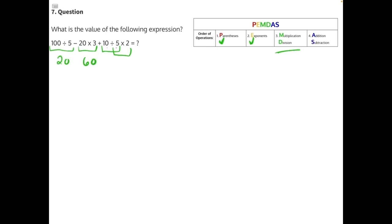10 divided by 5 will give us 2. And then that result needs to be multiplied by 2. 2 times 2 will then give us 4.